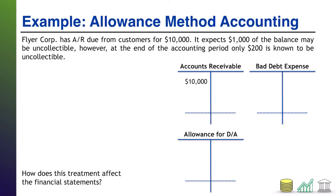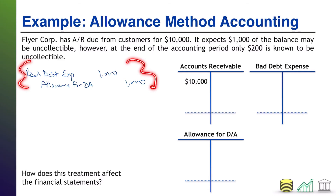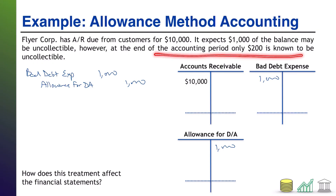We do that with the following journal entry: debit bad debt expense $1,000, credit allowance for doubtful accounts $1,000. This is our estimate of the bad debt, so we have a debit of $1,000 in the bad debt account and a credit of $1,000 in the allowance account. Then it says: at the end of the accounting period, only $200 is known to be uncollectible.